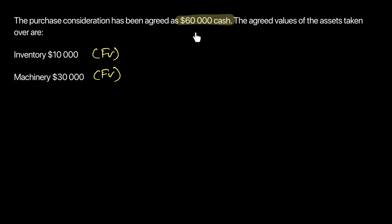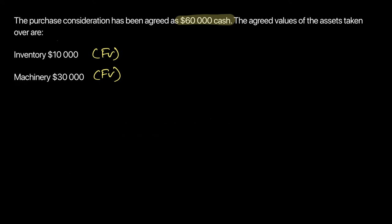Using these fair values and purchase consideration, let's calculate goodwill. We are acquiring only two assets and no liabilities are being taken over, so we get assets worth 40,000 — that's the fair value of net assets. How much did we pay? We were willing to pay 60,000 in cash, so 60,000 is our purchase consideration. 40,000 worth of net assets have been acquired, so goodwill is worth 20,000. That's the amount AJ Limited has paid for goodwill, and it should be treated as an intangible asset.